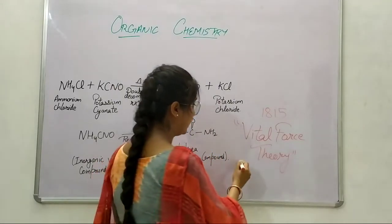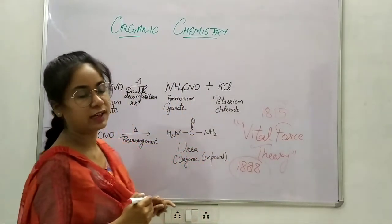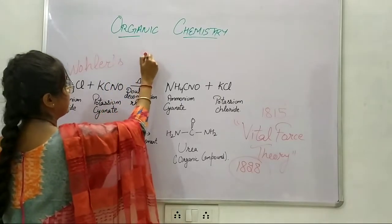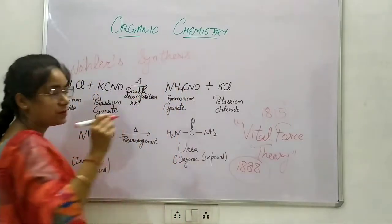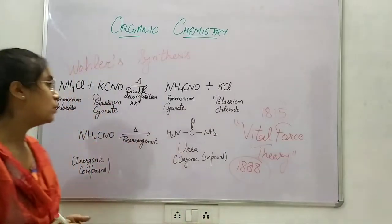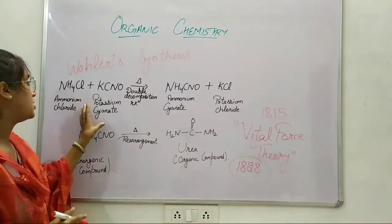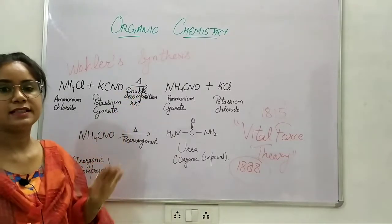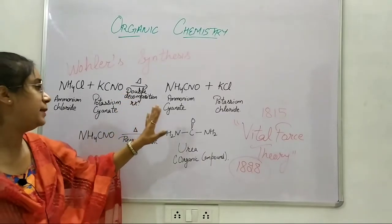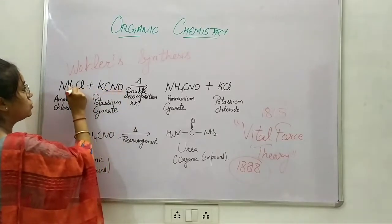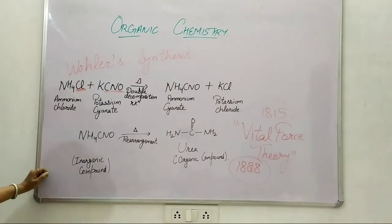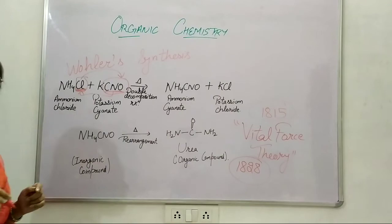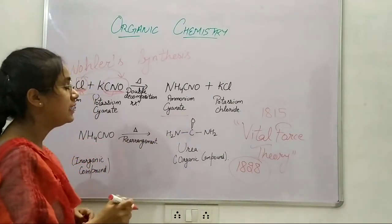But in 1828, another chemist showed up whose name was Friedrich Wöhler, and he made what is known as Wöhler synthesis. He was doing some research but accidentally prepared an organic compound in his laboratory. What he did was he took ammonium fluoride and potassium cyanate and mixed these two reactants, then started heating them. During the heating process, a double decomposition reaction occurred and the two components shifted their places — this one moved here and this one moved here — and as a result, ammonium cyanate and potassium fluoride were formed.